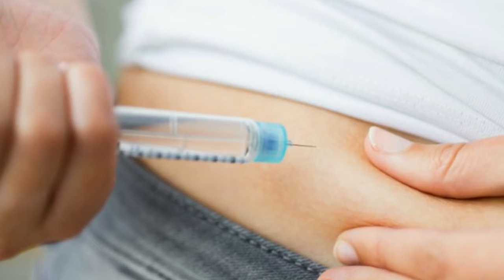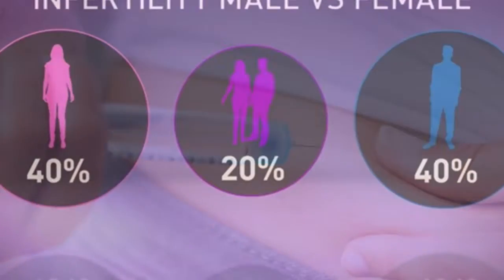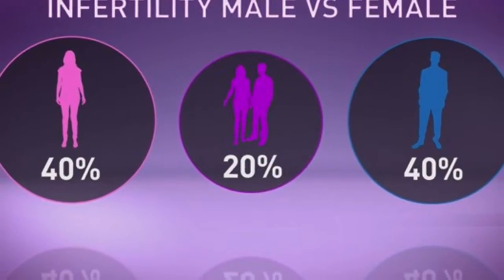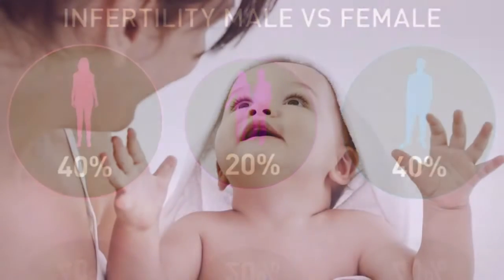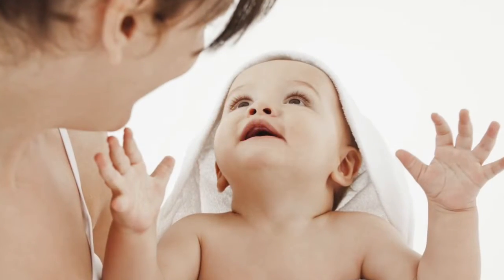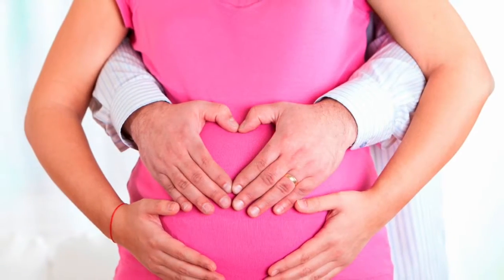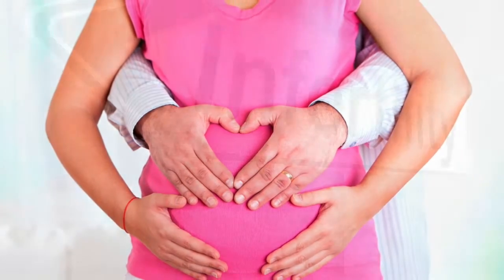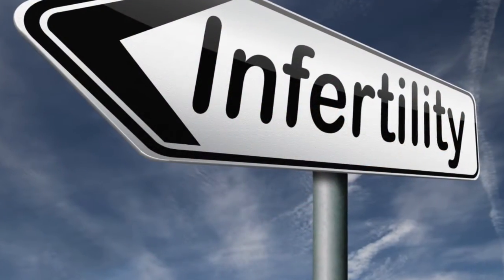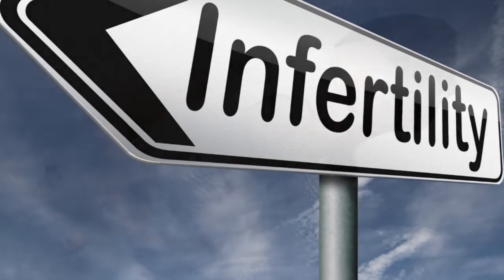Ectopic Pregnancy: this is a pregnancy when the fertilized egg does not implant in the womb. In most cases, the fertilized egg grows in the fallopian tube. If it stays in the fallopian tube, the mother will surely miscarry before complications develop, such as the rupture of the fallopian tube.